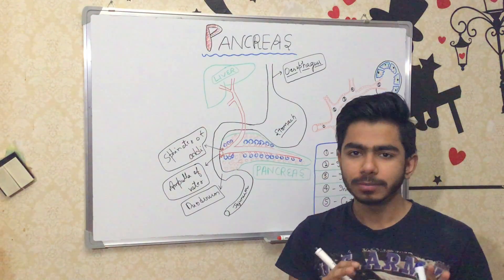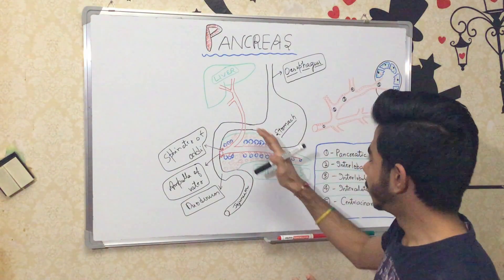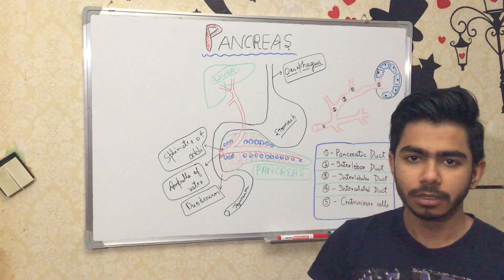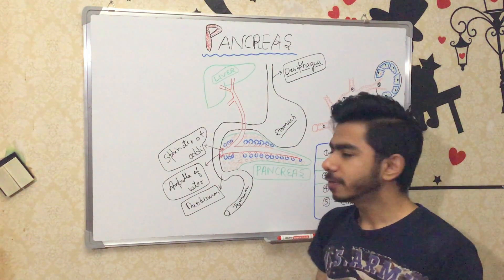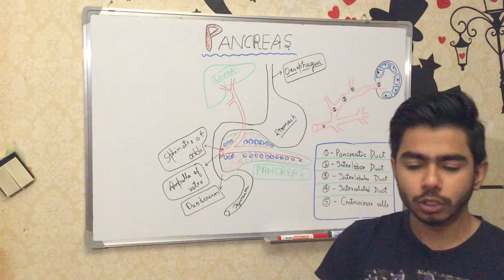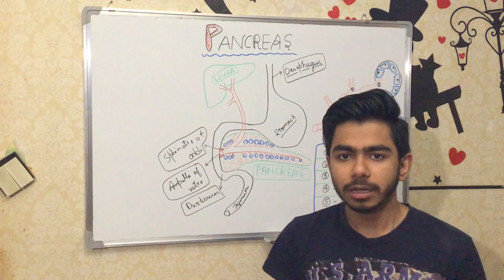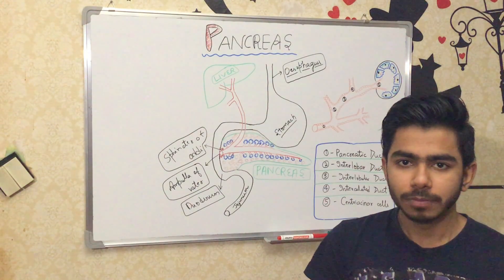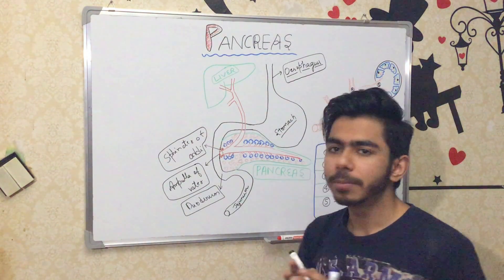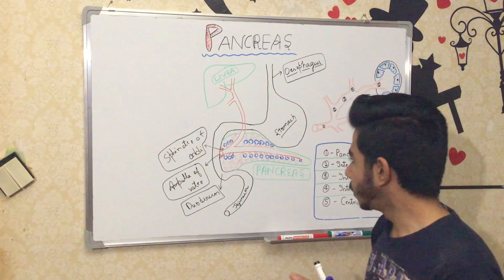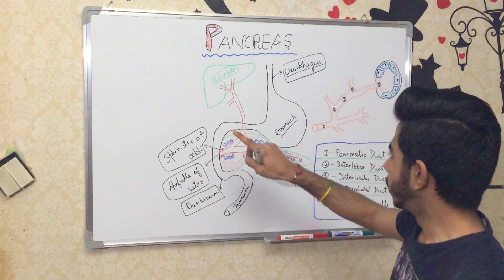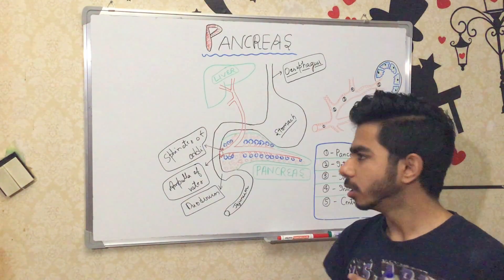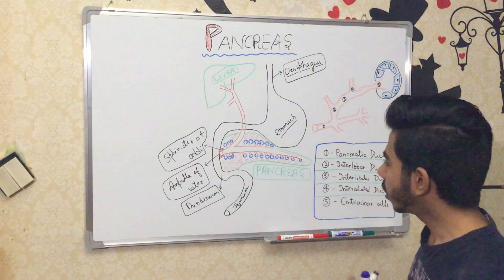The pancreas is an elongated organ present between the C-shaped duodenum. It is a mixed gland, which means it can perform exocrine functions as well as endocrine functions. It is a very important gland present in our body, located just behind the stomach and covers the peritoneum.